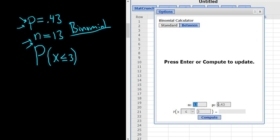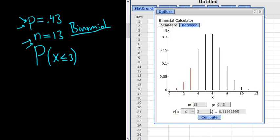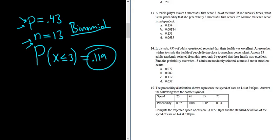So everything looks good. N is 13. Probability of success is 0.43. At most is less than or equal to. Click Compute. So I got 0.119. Let's see, 0.119. Good stuff. It's one of the choices. So C is the correct answer. That's it.